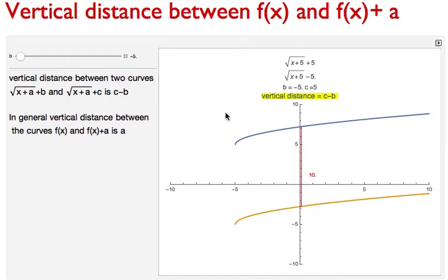This graph is illustrating this concept. Square root of x plus 5 plus 5, that is this blue line and square root of x plus 5 minus 5, this is this orange line.